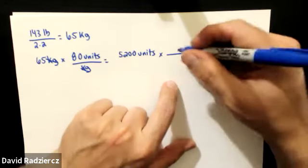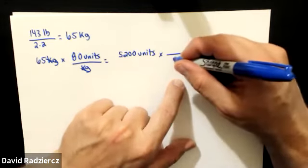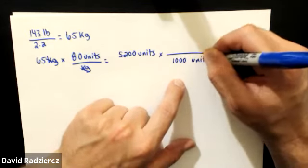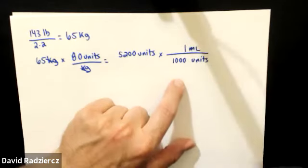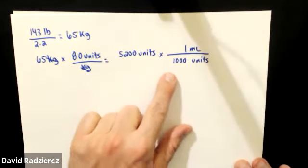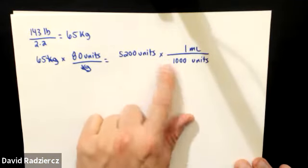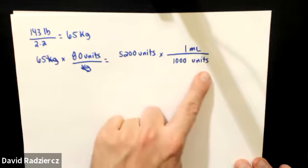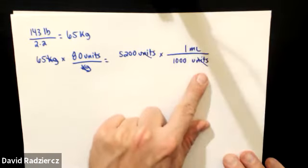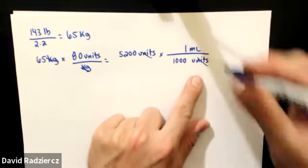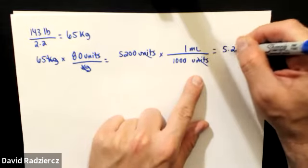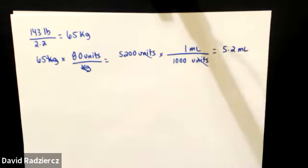5,200 units — there's 1,000 units per milliliter. Using dimensional analysis, crossing things out, gives a final answer of 5.2 milliliters for the bolus.